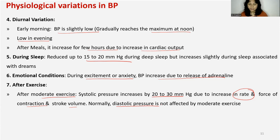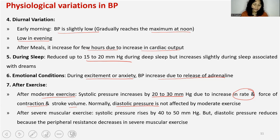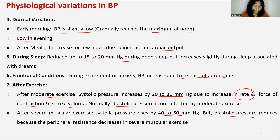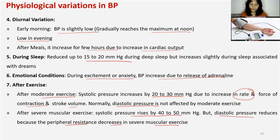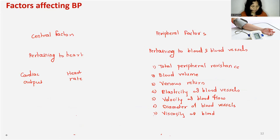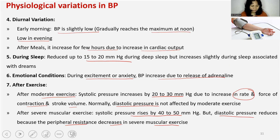In severe muscular exercises, systolic blood pressure raises very high — by 40 to 50 mmHg — but diastolic pressure reduces because peripheral resistance decreases. During vigorous exercise, there is vasodilatation in the later stage, reducing peripheral resistance, which allows more blood to flow to the venous side and diastolic blood pressure falls. This concludes the physiological and pathological variations of blood pressure.